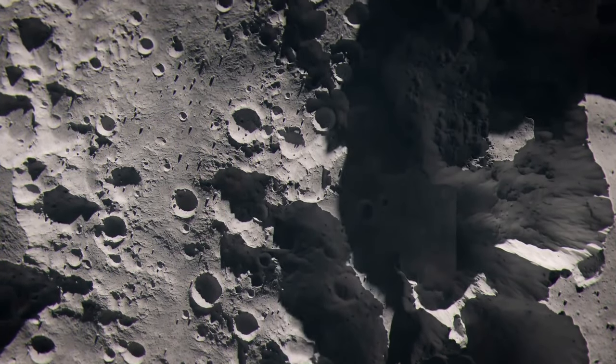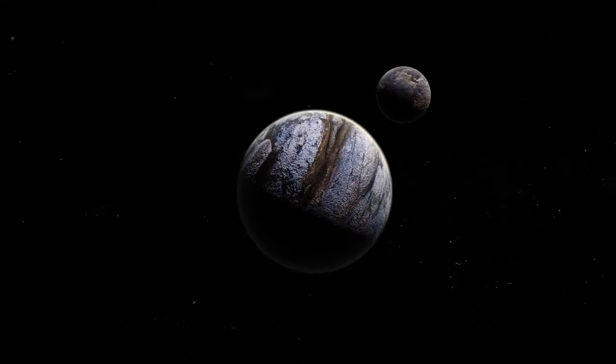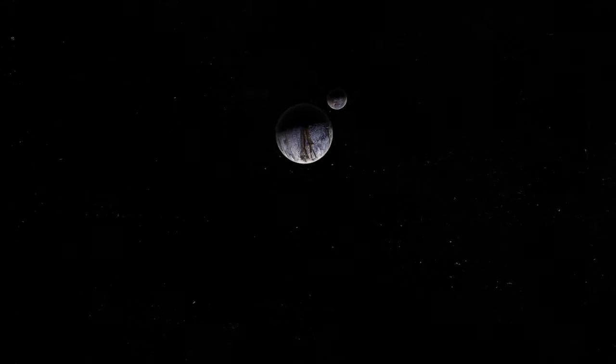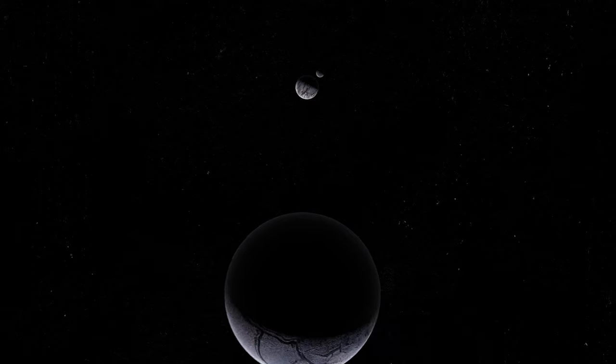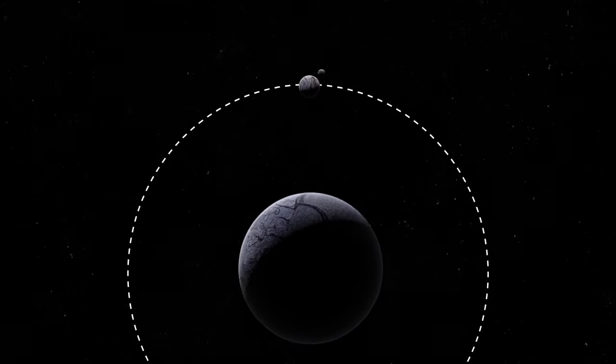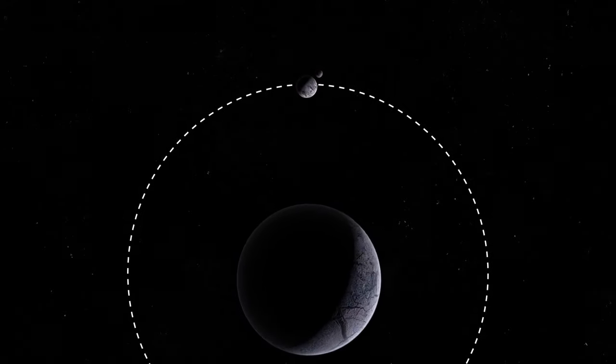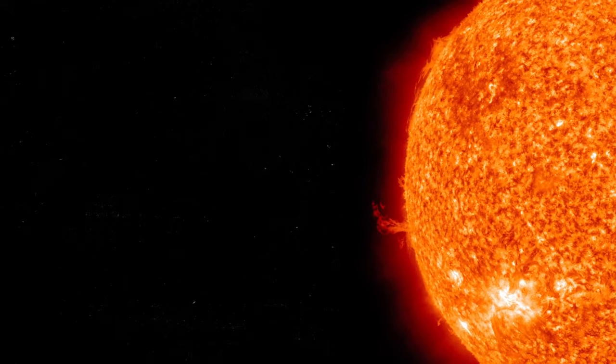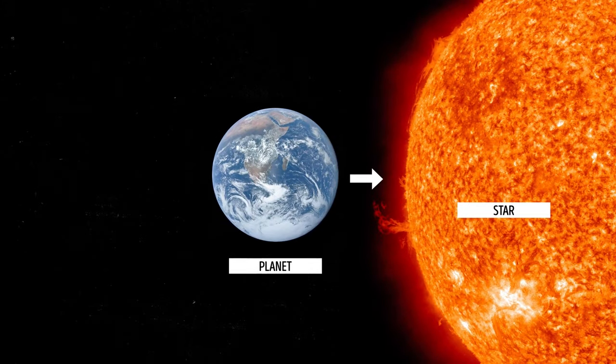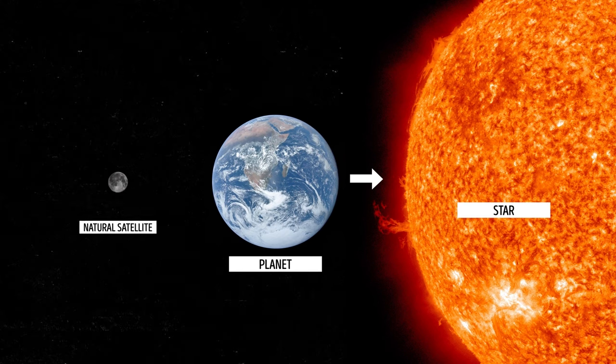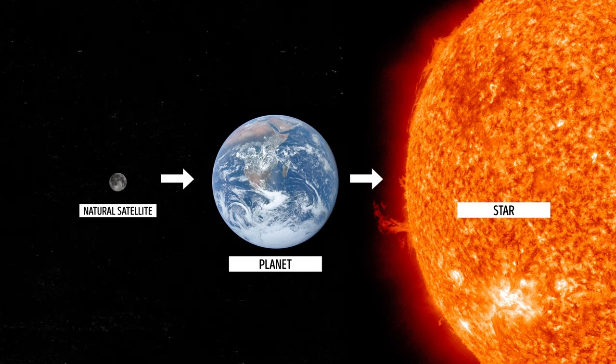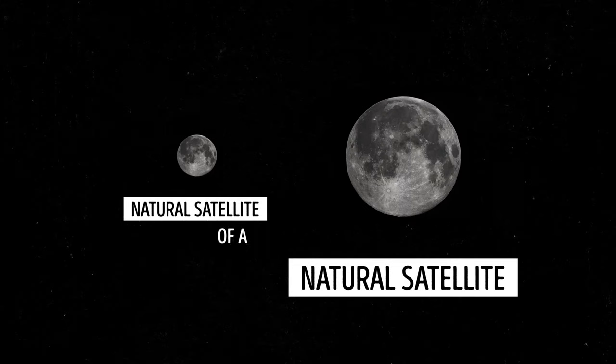They might not exist in our solar system or any other, but some astronomers claim that the concept of a moon bringing up its own baby moon is quite plausible. The thing is, in all planetary systems we know about, natural satellites occur in a strict order. Planets orbit stars, and moons move around planets. But then, why can't submoons orbit moons?